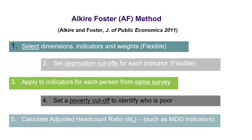So we know the dimensions, the indicators, and the weights — which are flexible depending on your country, the data available, and which dimensions or variables you think are more important. The next step is to set a deprivation cutoff for each indicator, then apply those indicators to each person from the same survey. Then you set a poverty cutoff to identify who is poor, and calculate the adjusted headcount ratio.